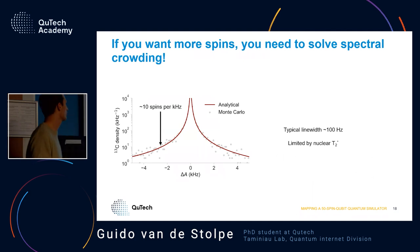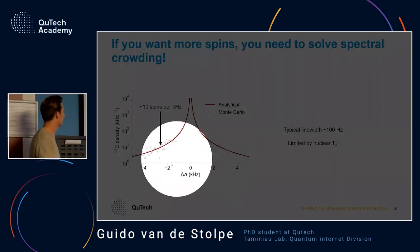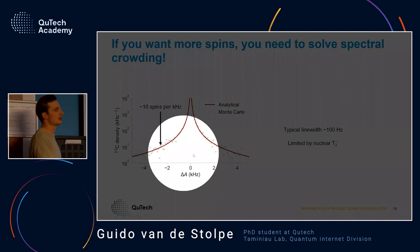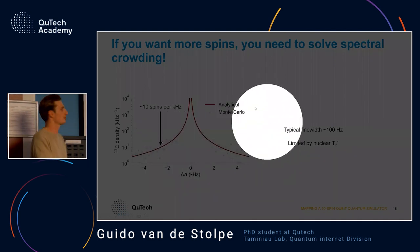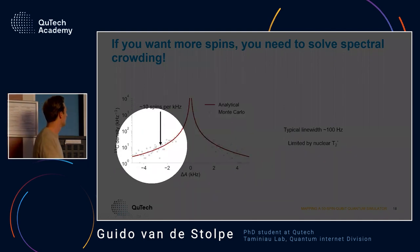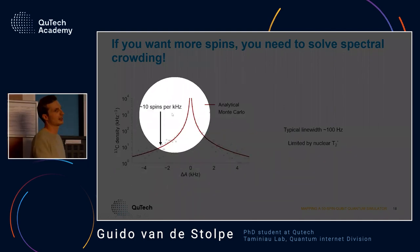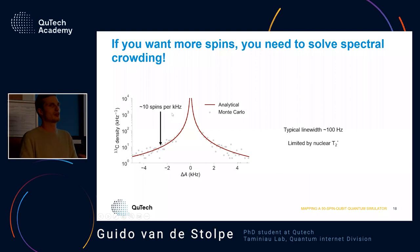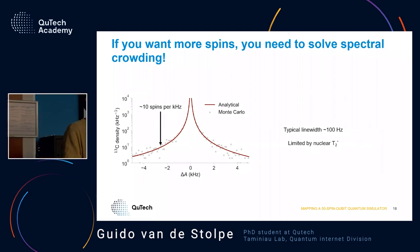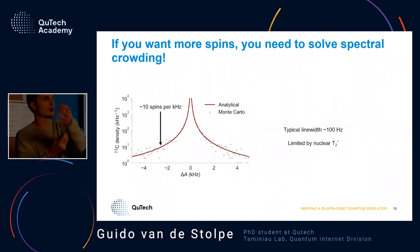This already happens quite a lot in our system. For a certain shift from the electron spin, if you look at how many spins would you expect at that frequency, in some regions you already see like 10 spins with practically the same frequency — so you cannot just say 'this is spin A because it has this frequency, this is spin B because it's at this frequency.'